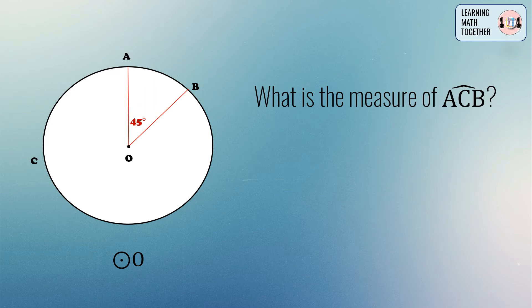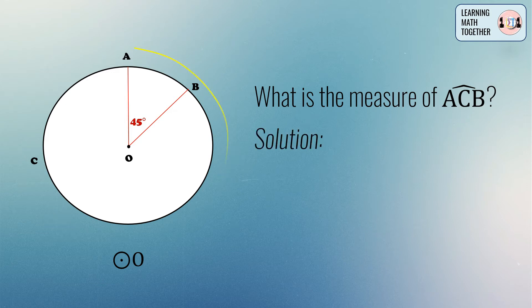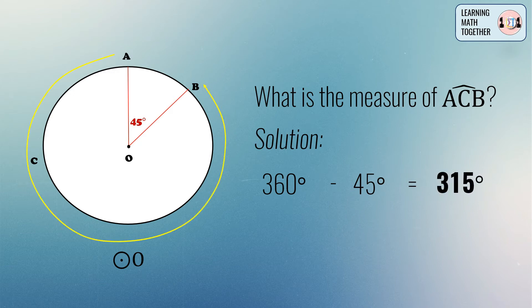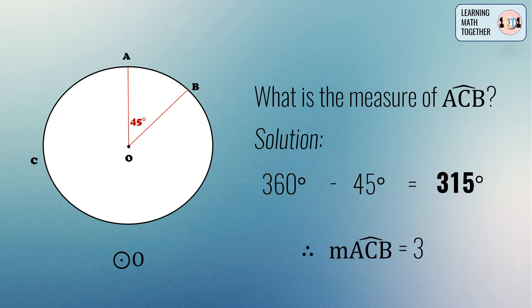To get the measurement of arc ACB, we just have to subtract 45 degrees from the entire degree measure of the circle, which is 360 degrees. So 360 degrees minus 45 degrees gives us the measurement of arc ACB, which is equal to 315 degrees.